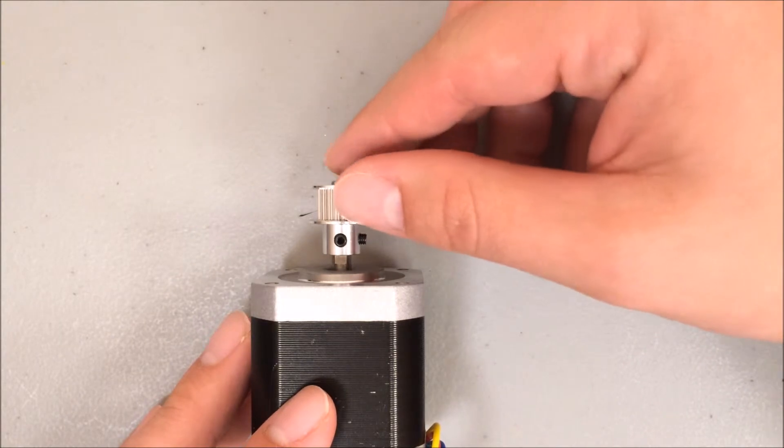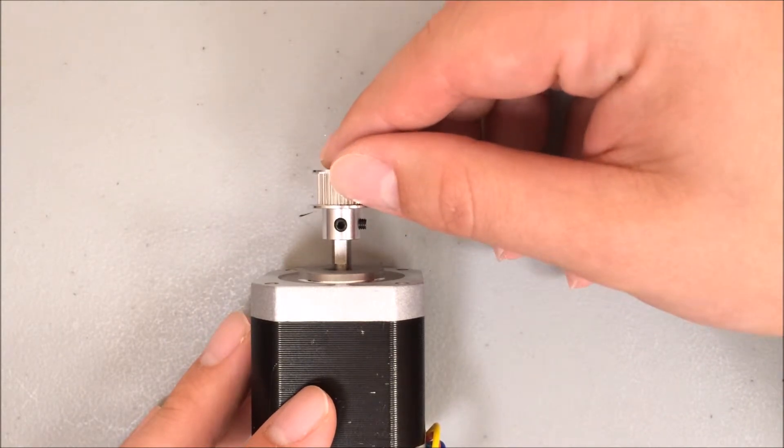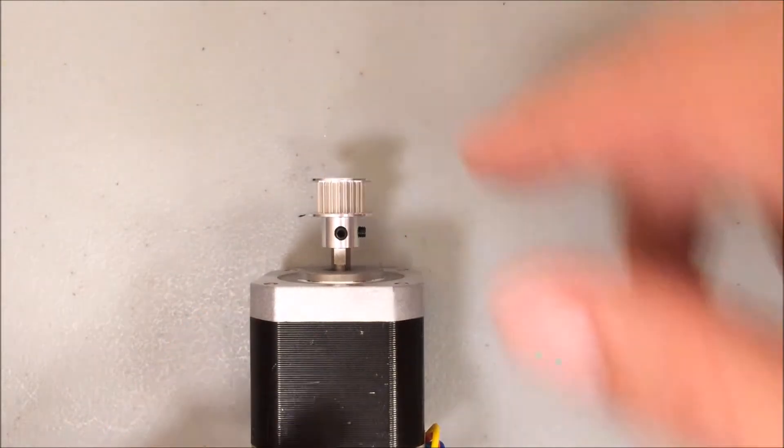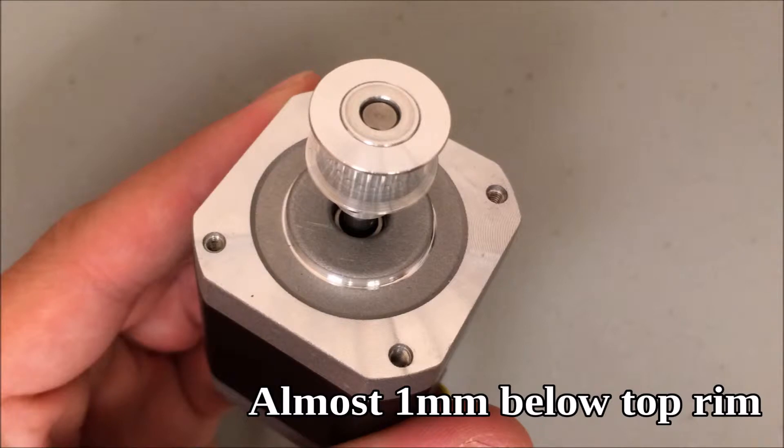Here I've laid the motor on its side to show you that one of those set screws lines up with the flat side of the motor shaft. You want the pulley at the very top of the motor shaft. In fact, in this image you can see that it's slightly above the top of the motor shaft. Try to match this as best as possible.